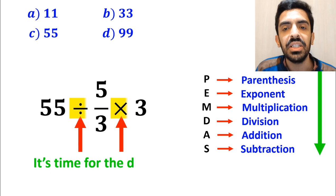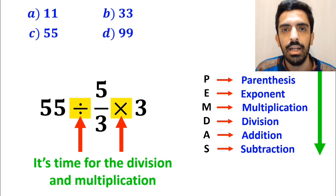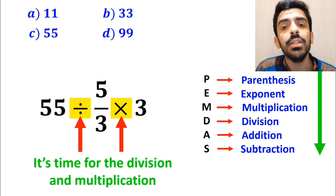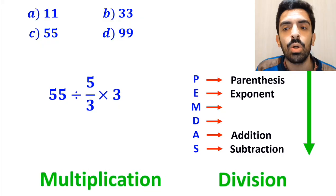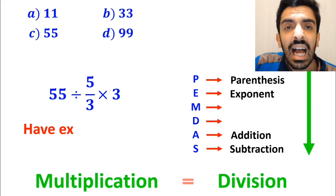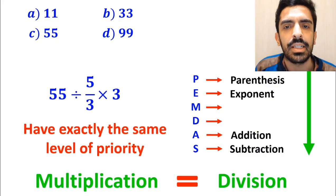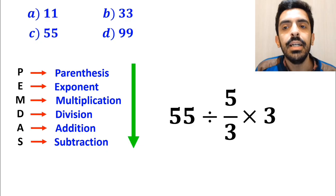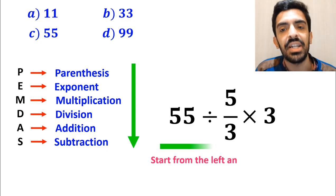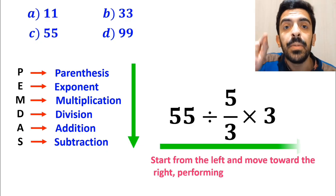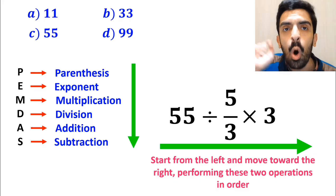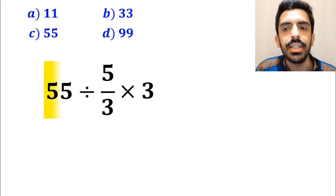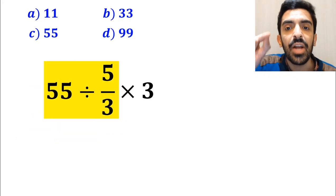Now it's time for the division and multiplication. However, it's very important to note that according to the PEMDAS rule, multiplication and division have exactly the same level of priority. In this situation, the best strategy is to start from the left and move toward the right, performing these two operations in order. So, we'll start with the expression 55 divided by 5 over 3.